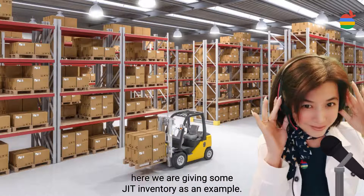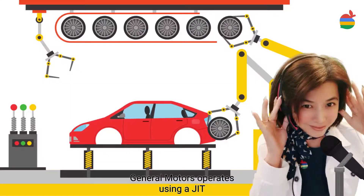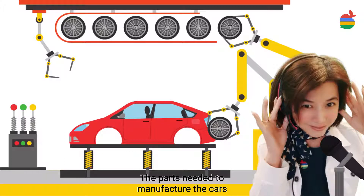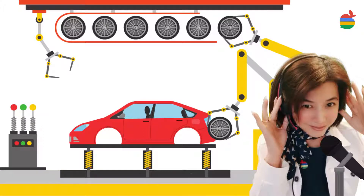Here are some JIT inventory examples. General Motors operates using a JIT inventory, relying on its supply chain to deliver the parts it needs to build the car. The parts needed to manufacture the car do not arrive before or after they are needed; rather, they arrive just as they are needed.